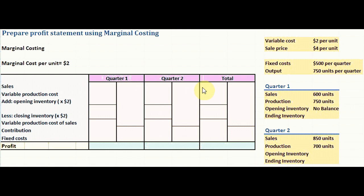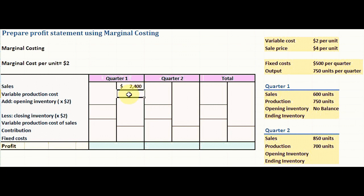For quarter one, sales is 600 units. We multiply 600 by the sale price of $4 per unit, giving a total sales of $2,400 for quarter one.